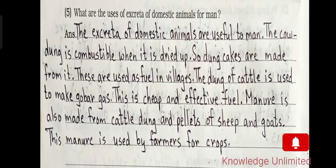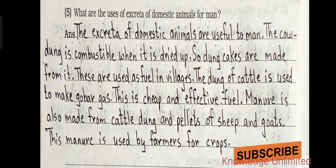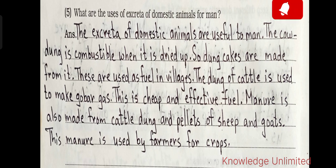Question five: what are the uses of excreta of domestic animals? The excreta of domestic animals are useful to men. Cow dung is combustible when dried, so dung cakes are made from it and used as fuel in villages. Cattle dung is also used to make gobar gas, which is a cheap and effective fuel. Manure is also made from cattle dung and pellets of sheep and goats, and used by farmers for crops.